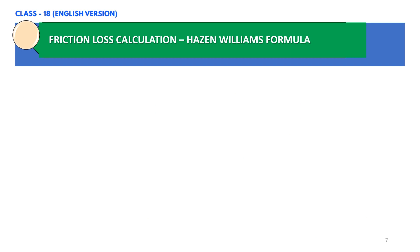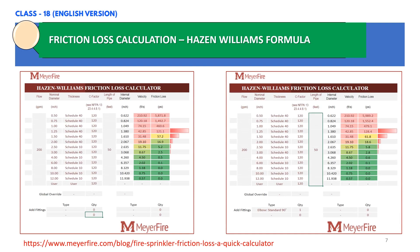In this slide let's have a look at a friction loss calculator based on the Hazen-Williams formula. This calculator is available online from the link shown in this slide. You can enter your data, and if you have fittings such as 90-degree elbows, you just type the fitting type and quantity. For a 3-inch pipe the calculator gives a friction loss result of 2.8 PSI.